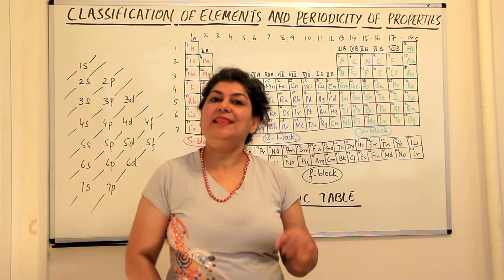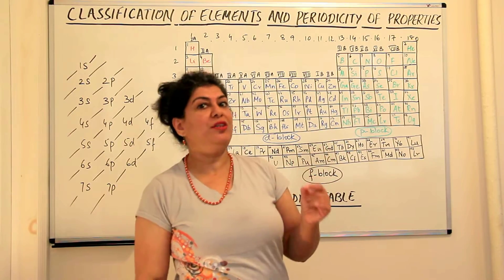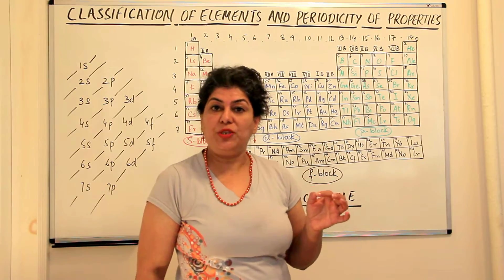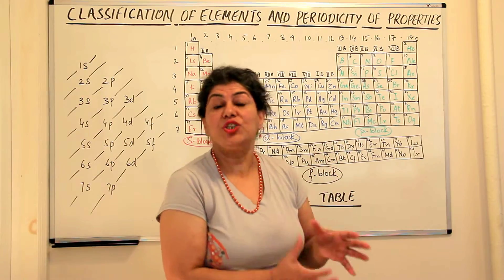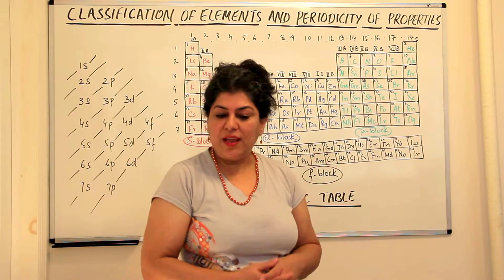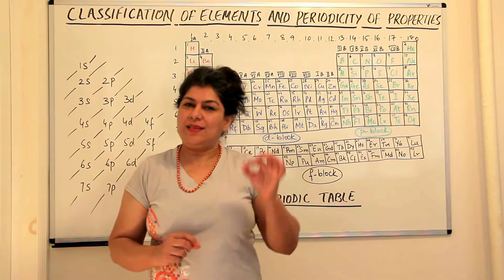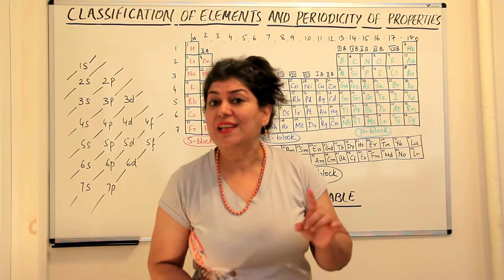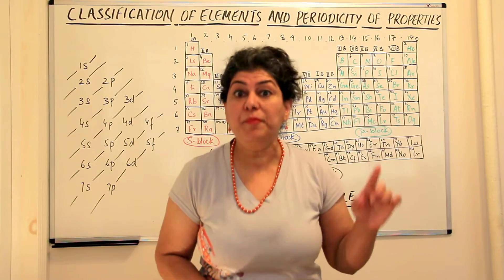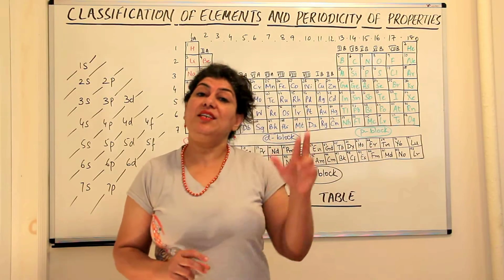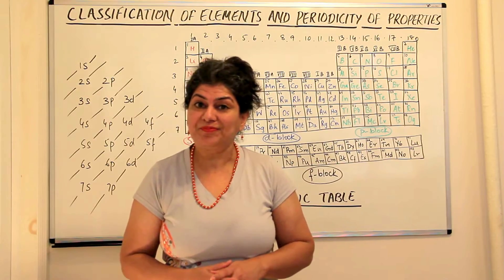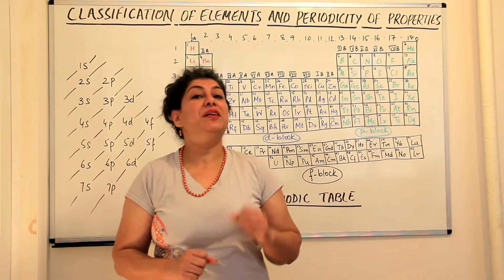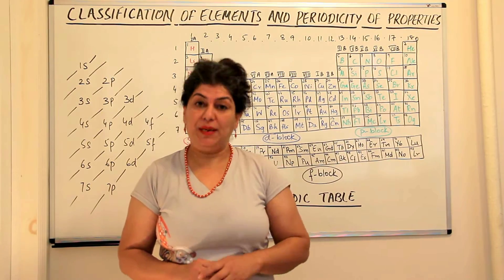So he said the atomic mass is not the fundamental property of an atom, it is the atomic number which is the fundamental property. Therefore he said that if we classify elements not according to their atomic weights but according to their atomic numbers, we might find more similarities. So he modified the periodic law given by Mendeleev.